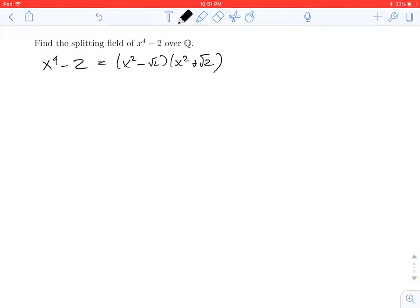Now, x squared minus root 2 is again a difference of squares. And so I can factor it as x minus, we need the square root of the square root of 2. That's the fourth root of 2. And then, x plus the fourth root of 2.